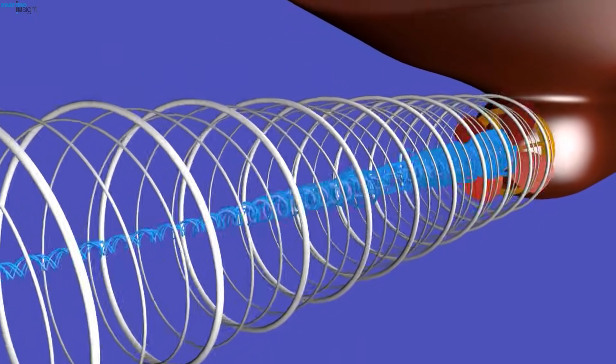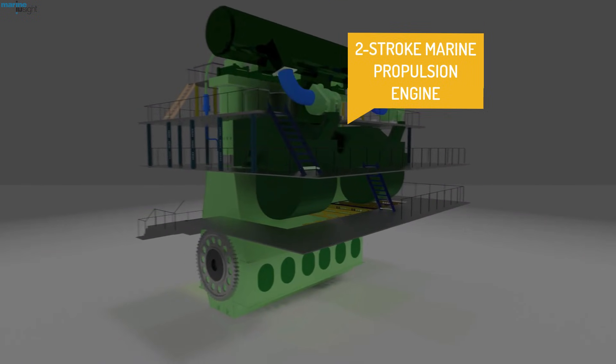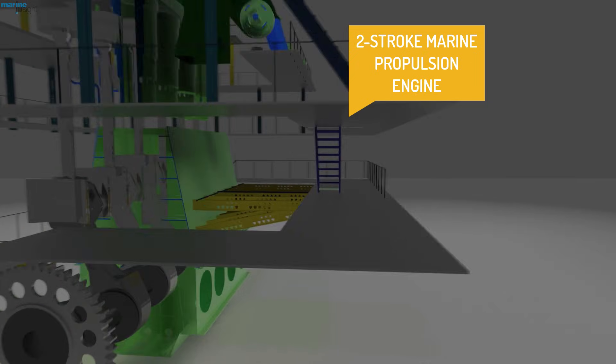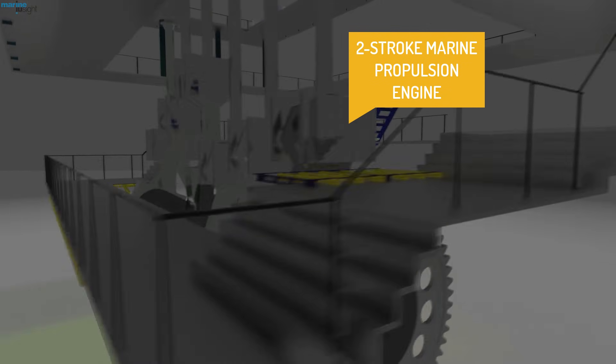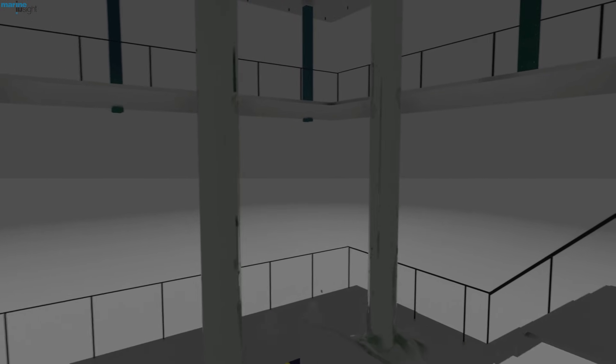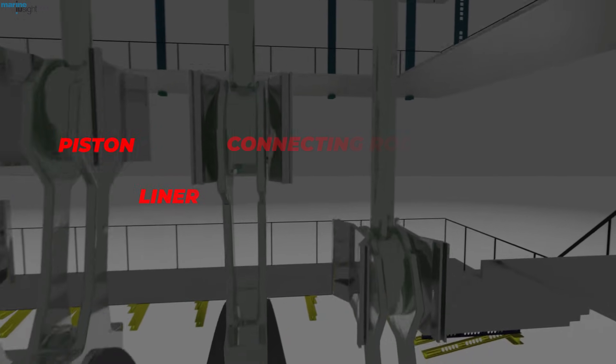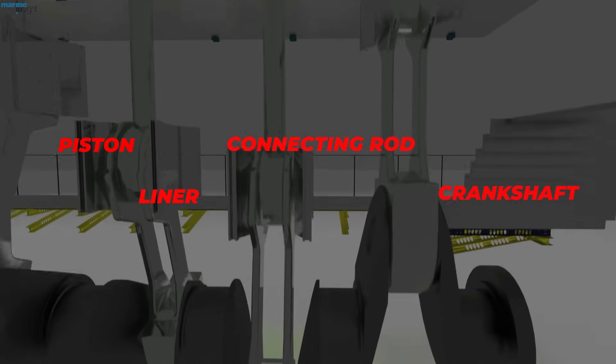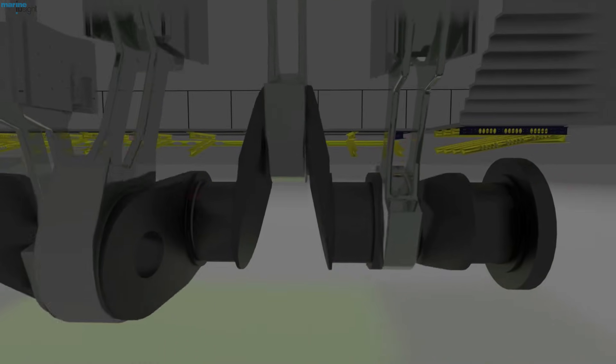This process might sound simple, but the engine is complex machinery, and so is the reversing operation it undergoes. The two-stroke marine engine used in ships is made up of several parts which help it operate efficiently and safely. Some of these components work together to reverse the engine.